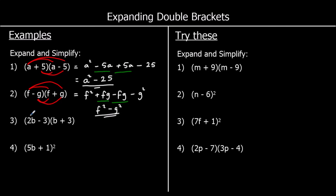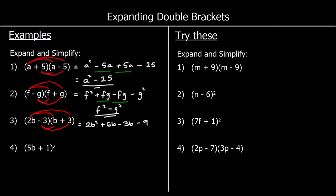Number three: 2b times b — two times b times b, and b times b is b squared multiplied by two, so it's 2b squared. 2b times three: three times two is six, so 6b. Negative three times b is negative 3b. And negative three times positive three is negative nine. Collecting like terms: 6b take away 3b is 3b, so we've got 2b squared plus 3b minus nine. This one is not the difference of two squares because the terms in both brackets aren't the same — the first has 2b and the second just has b.